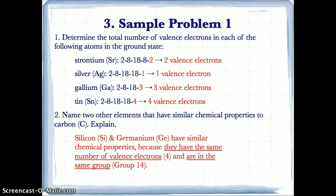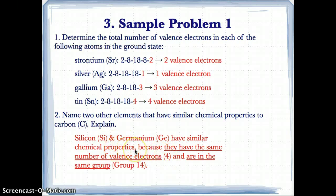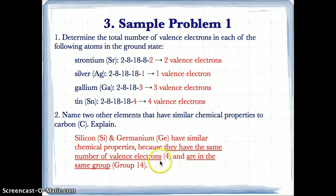In question 2, if we look at the periodic table we'll see that Si and Ge have the same number of valence electrons, which is 4, so therefore they have similar chemical properties. We'll also find that they are in the same group, which is group 14. To summarize, Si and Ge have similar chemical properties because they have the same number of valence electrons — 4 — and they're in the same group, group 14, because elements in the same group usually, if not always, have the same number of valence electrons.